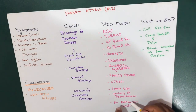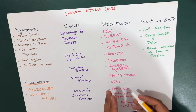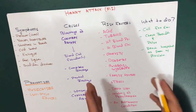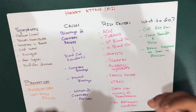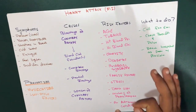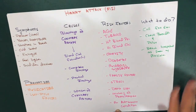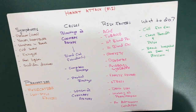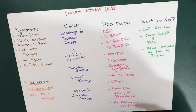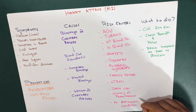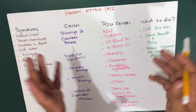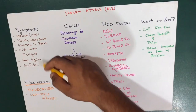A history of preeclampsia — high blood pressure during pregnancy — increases your lifetime risk of heart disease. An autoimmune condition such as rheumatoid arthritis or lupus can also increase your risk of heart attack.